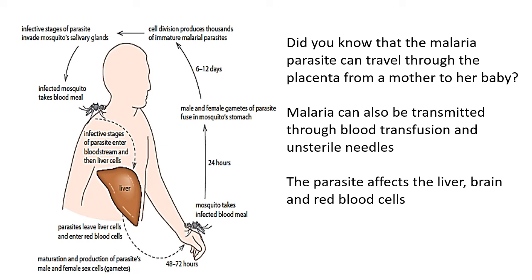If another mosquito then feeds on blood that contains Plasmodium, that mosquito also becomes infected and can carry malaria. Inside the mosquito, the male and female gametes of the parasite fuse inside the mosquito's stomach, producing thousands of immature parasites. These infective stages grow and invade the mosquito's salivary glands — which means the next time the mosquito injects its saliva to loosen blood, it injects Plasmodium into the person. This can be a little confusing, so I advise you to review it in your textbook and ask questions if needed.